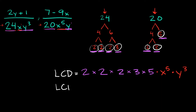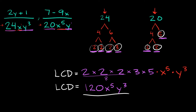Now we just simplify. 2 times 2 is 4, 4 times 2 is 8, 8 times 5 is 40, and 40 times 3 is 120. Then we just have our variables: times x to the fifth times y cubed. So the LCD is 120x to the fifth y cubed.